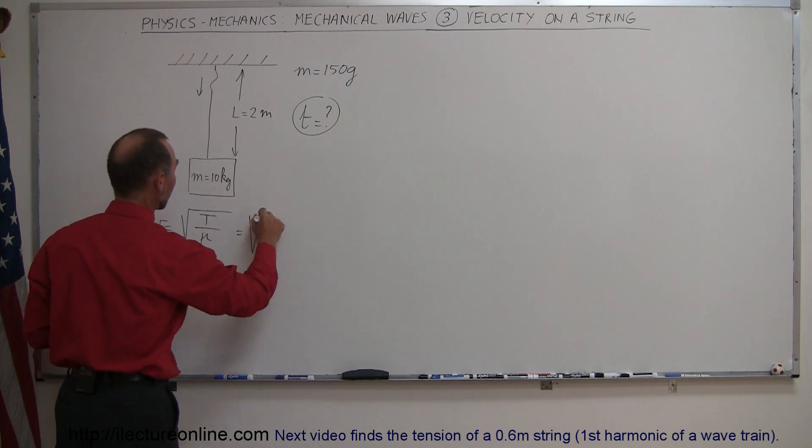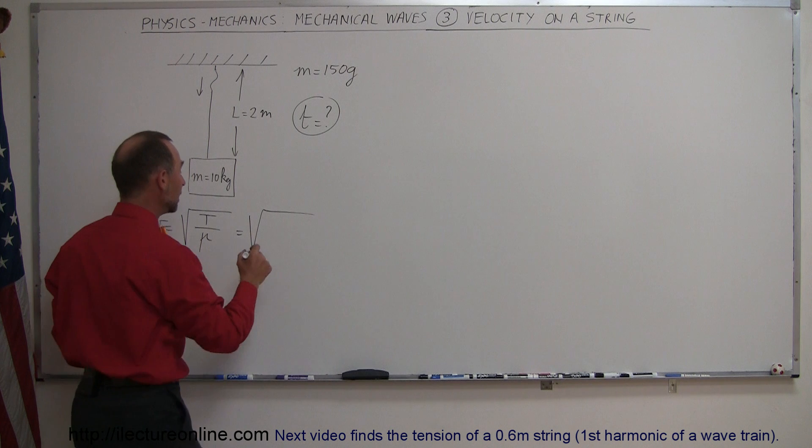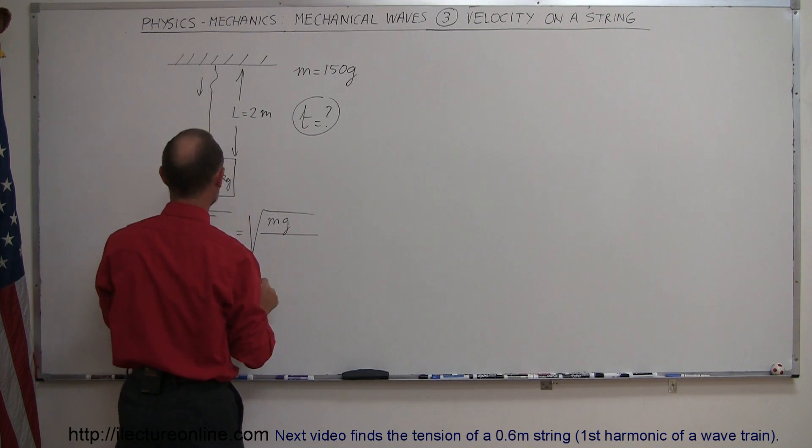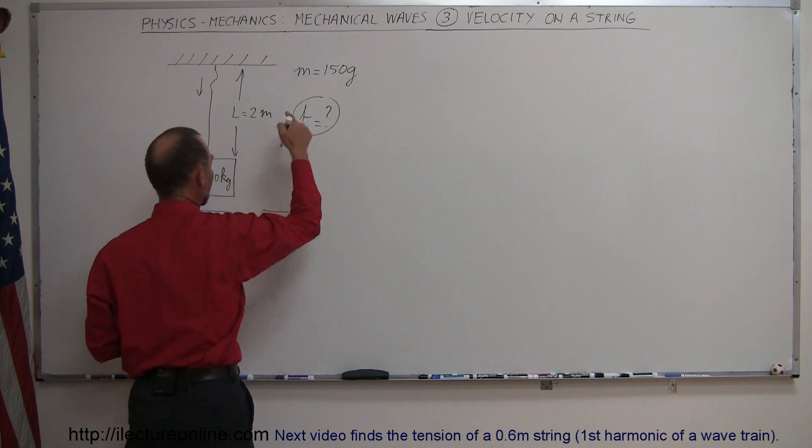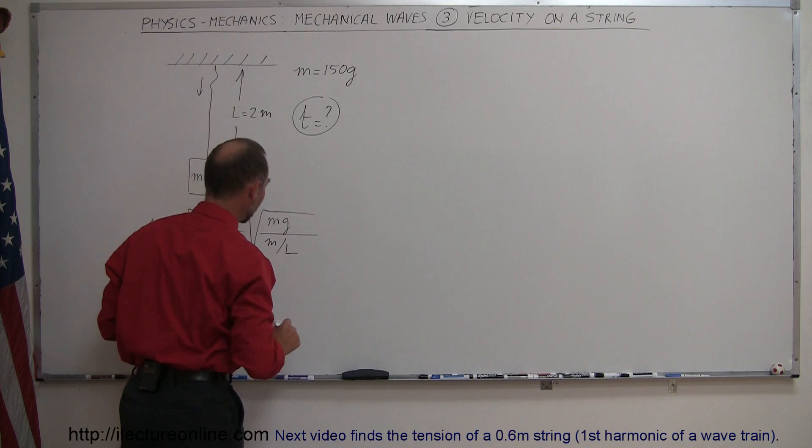Well in this case the tension is caused by the weight of this mass, and so that would be the mass times the acceleration of gravity, the weight, divided by the mass per unit length, which is 150 grams. That would be M divided by L, like this.